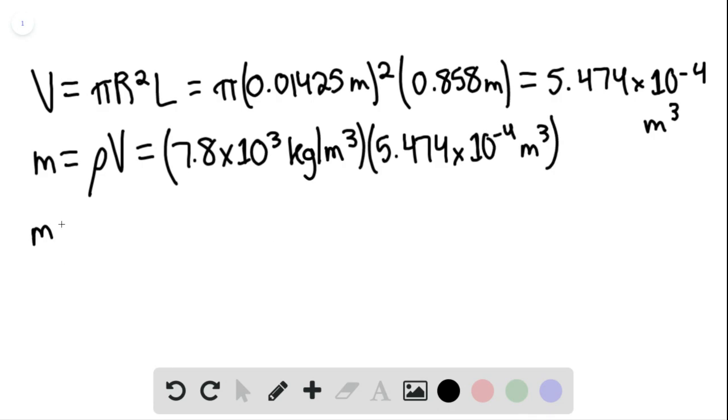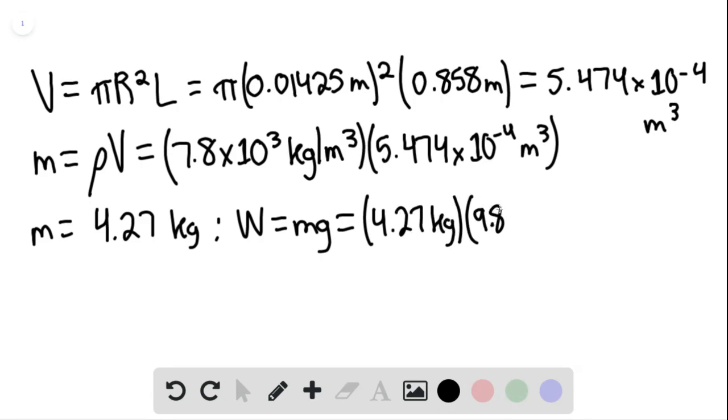And so we find we have a mass equaling 4.27 kilograms, and so the weight would be equal to the mass times gravity. This would be 4.27 kilograms multiplied by 9.8 meters per second squared.